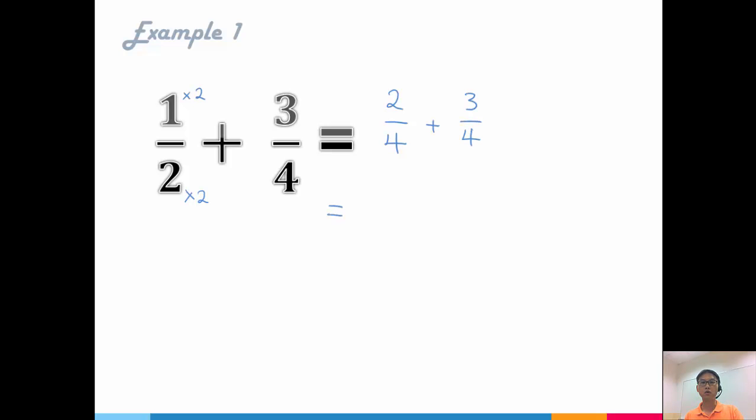And when I add them up, denominator stays the same. Add the numerator, 2 plus 3 gives me 5. And some of you will say, wait a minute, this is an improper fraction. Is this correct?